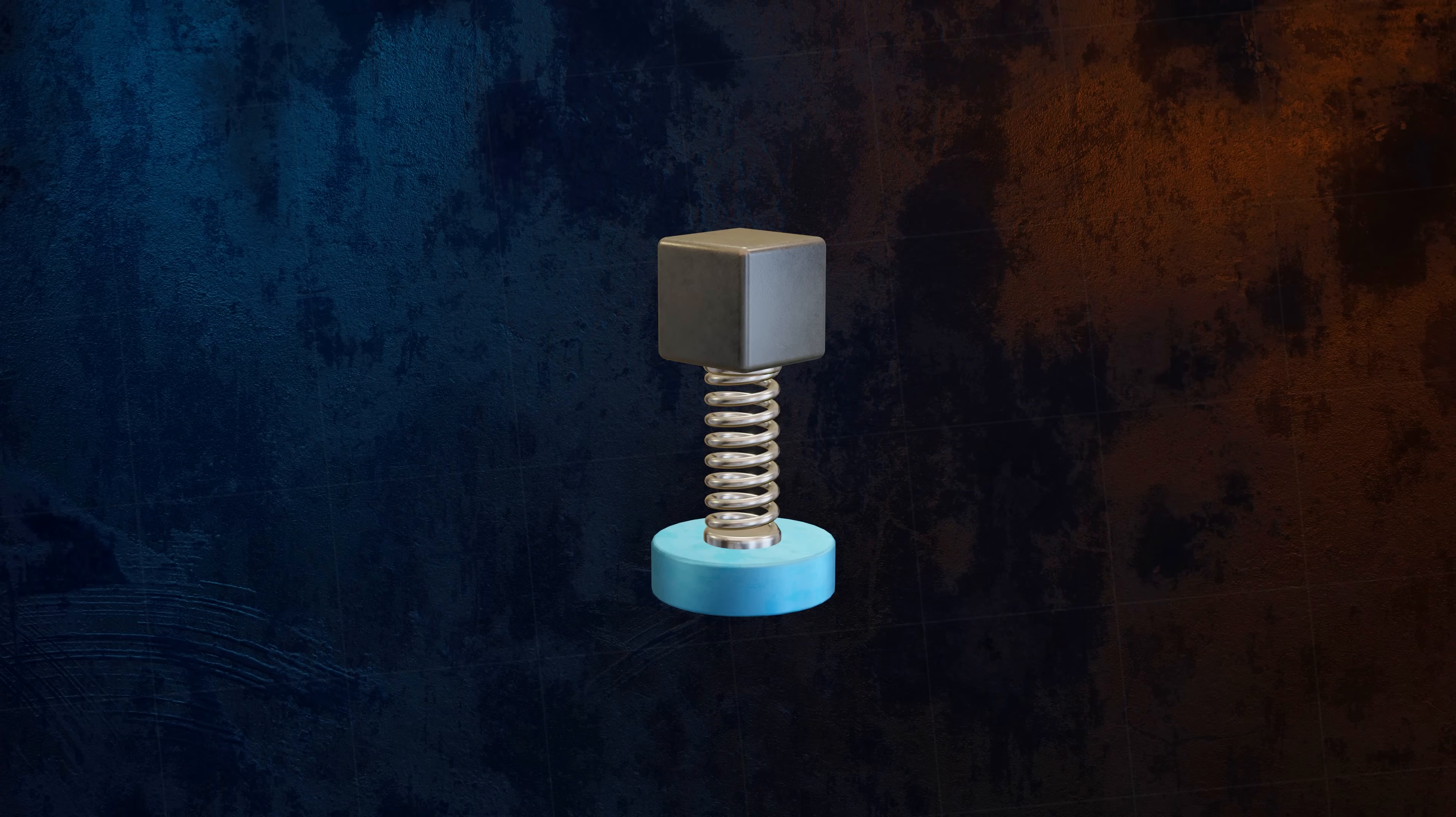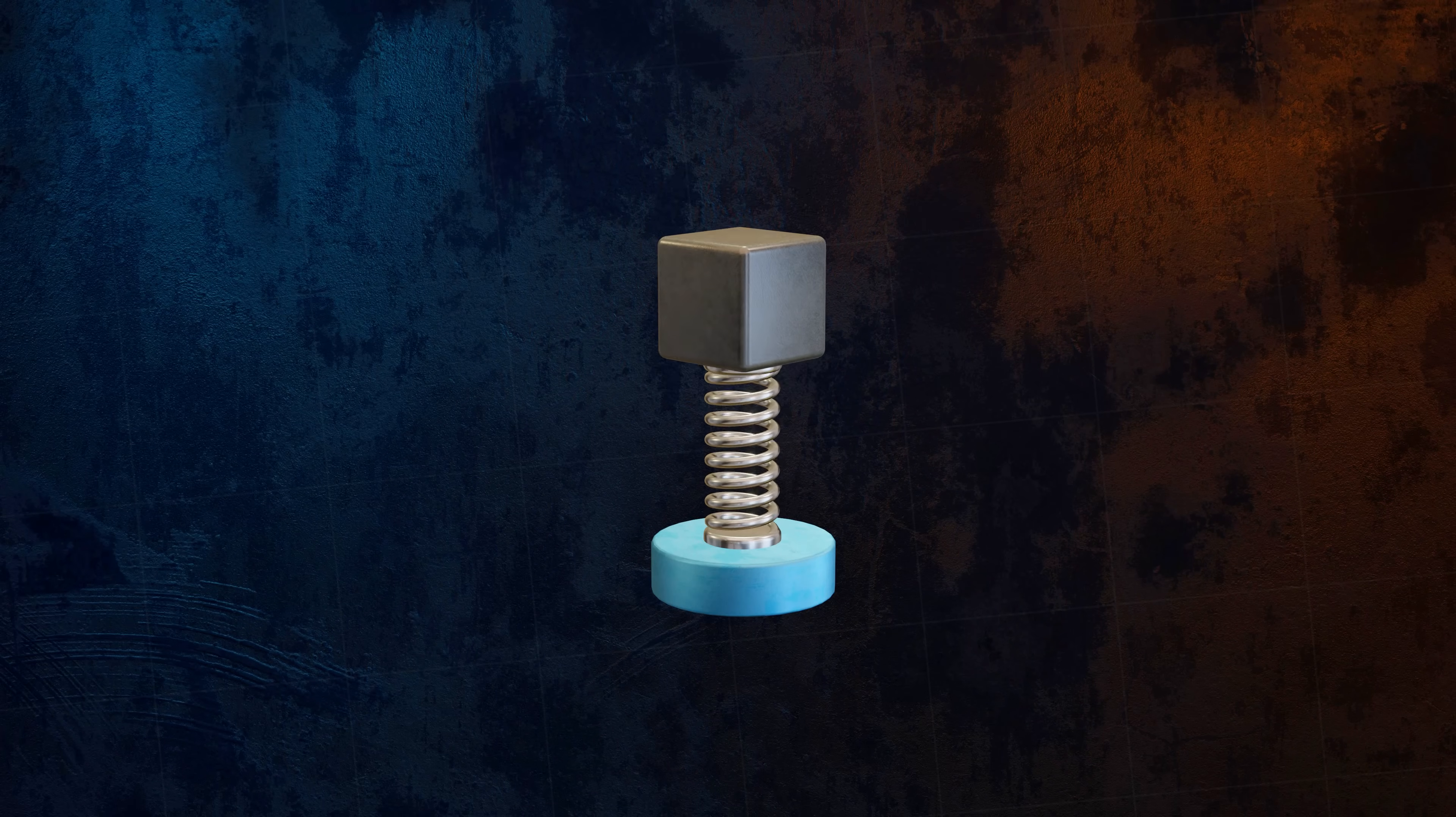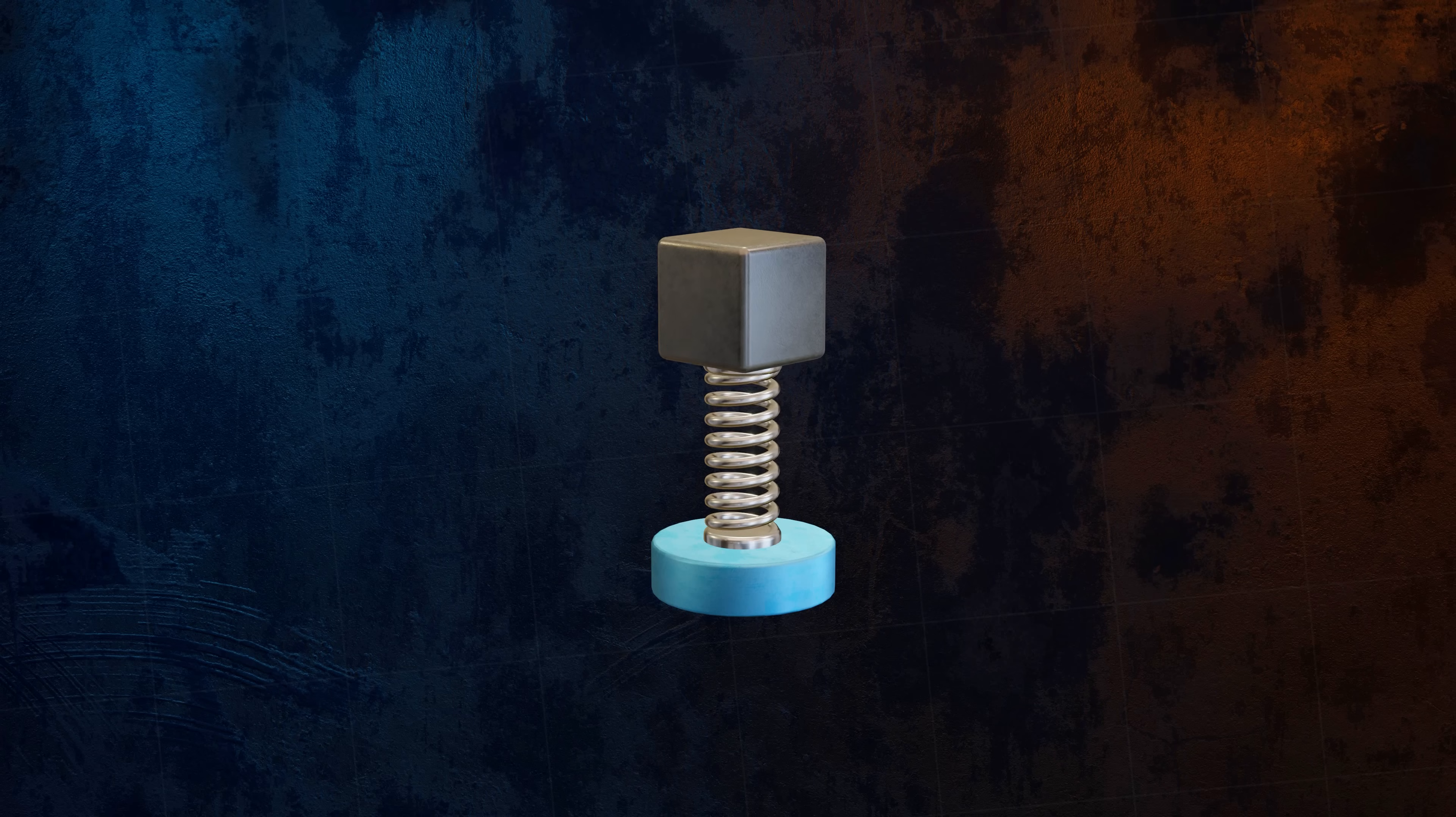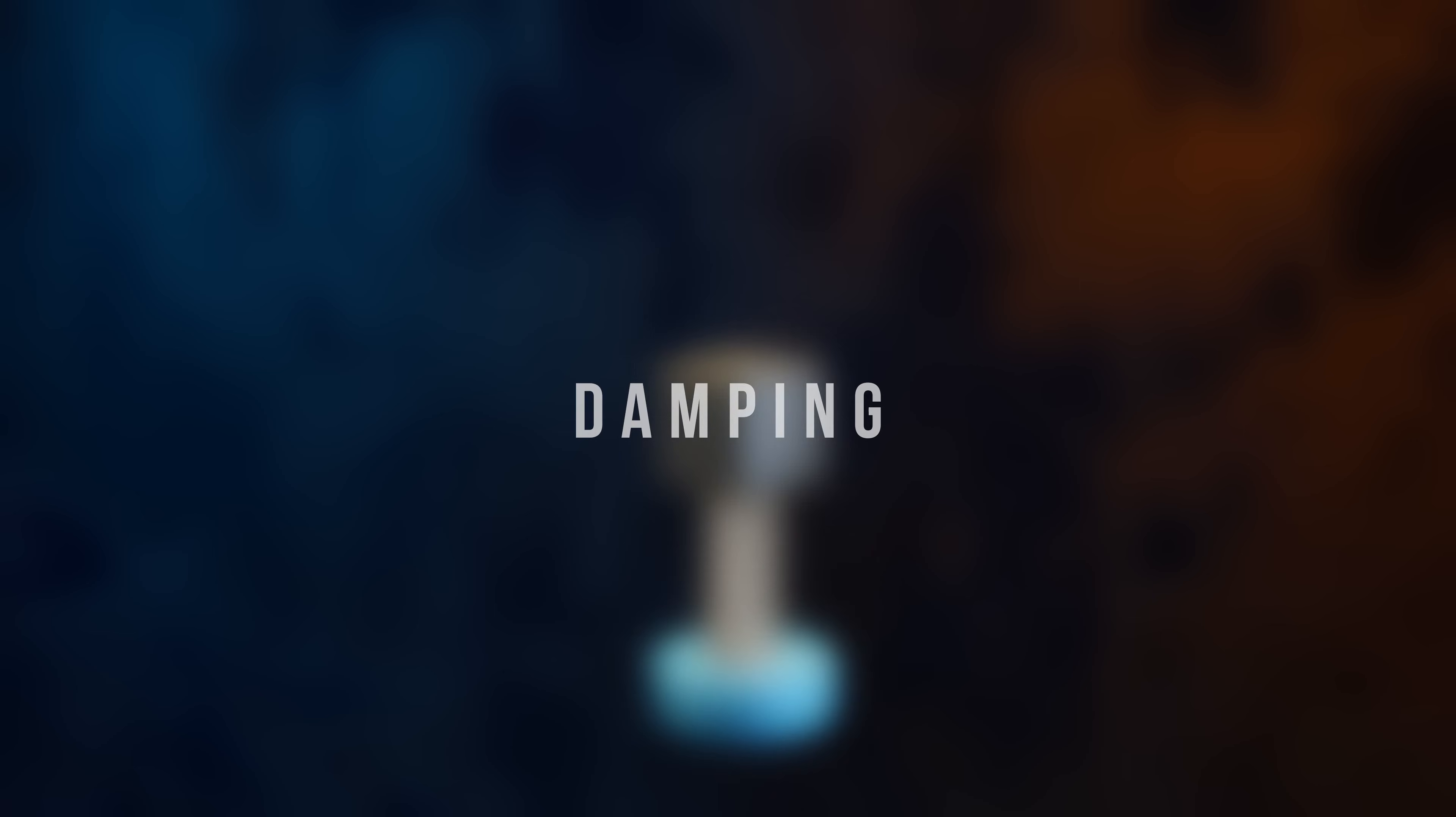Of course, when a mass oscillates freely, it doesn't do so indefinitely. Energy within the system is dissipated as heat over time, so the oscillations progressively decrease in magnitude and eventually stop altogether. This loss of energy is called damping, and it occurs in all real mechanical systems. There are several different mechanisms that can contribute to the overall damping of a system.